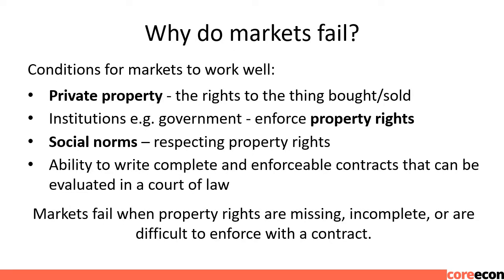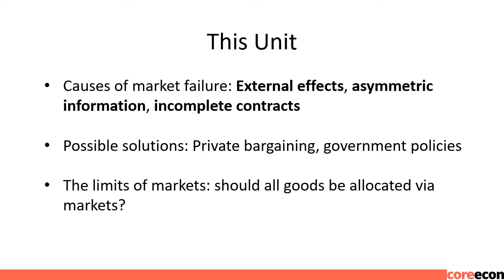Why do markets fail? The conditions for markets to work well are: (1) private property — the rights to things bought and sold must be clear; (2) institutions — government must enforce those property rights; (3) social norms must respect property rights; (4) the ability to write complete and enforceable contracts evaluable in a court of law; (5) markets fail when property rights are missing, incomplete, or difficult to enforce. In this chapter we discuss causes of market failures: external effects, asymmetric information, and incomplete contracts; possible solutions including private bargaining and government policies; and the limits of markets — should all goods be allocated via markets?